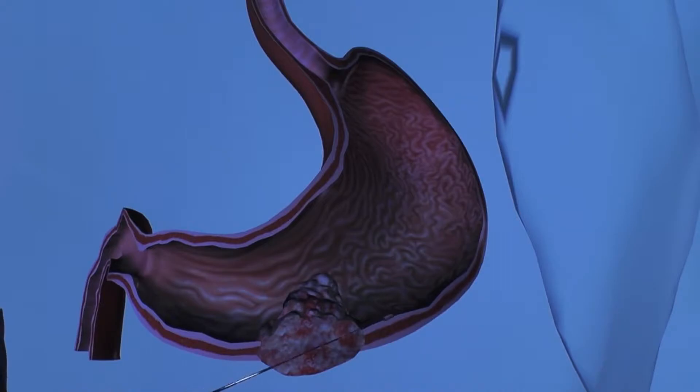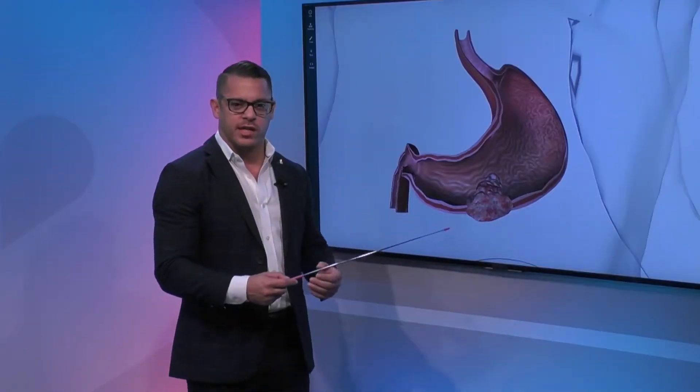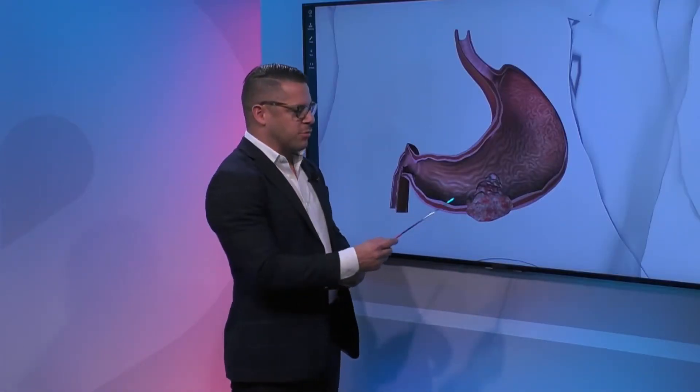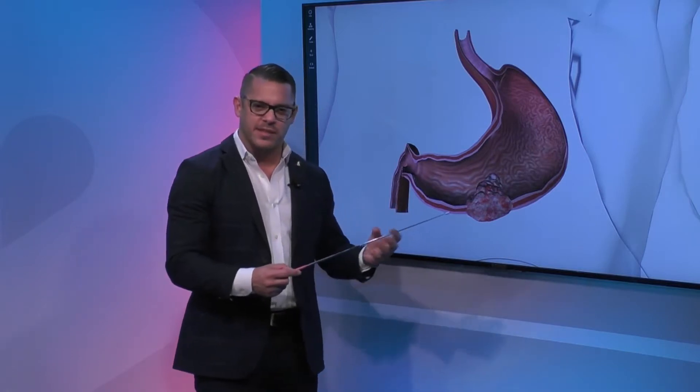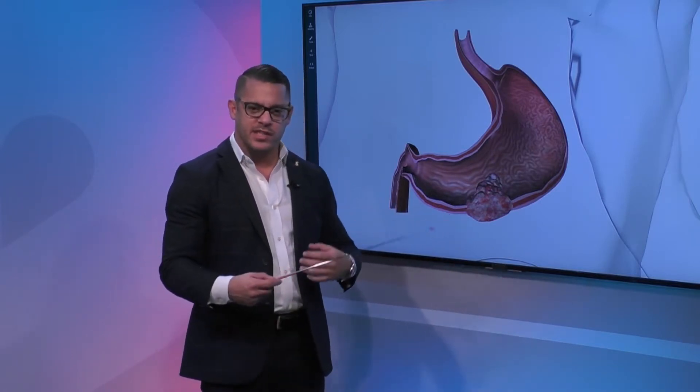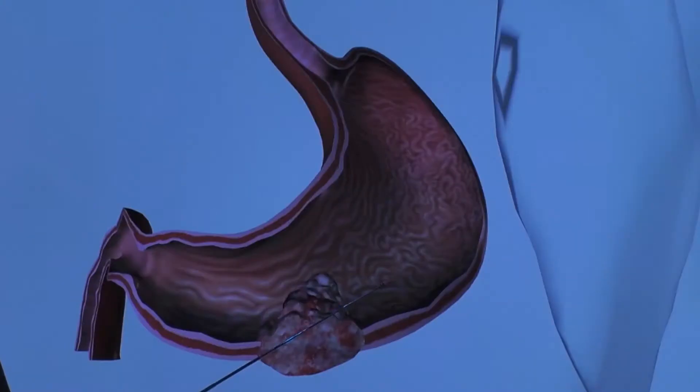As you start getting into the area of injury you start getting something called gastritis. The mucosa starts getting red, erythematous, friable. This can with time become an ulcer and you can see kind of a crater-like lesion in the mucosa.